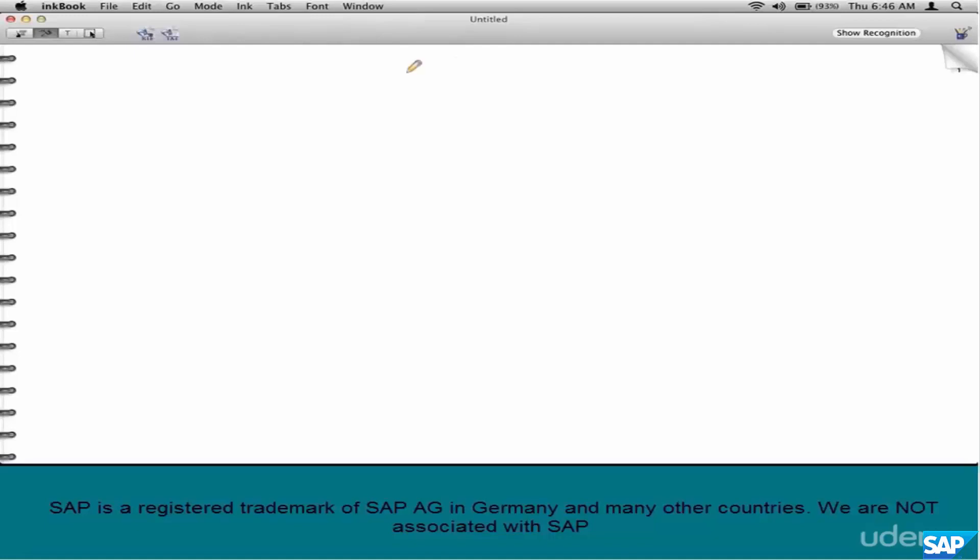Now we are going to talk about account determination. There are three or four different kinds of account determination, but the ones that are important for us as SD consultants are number one, revenue account determination, and number two, recon account determination.